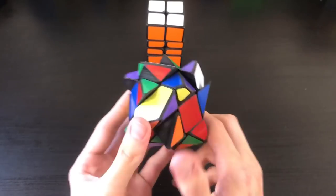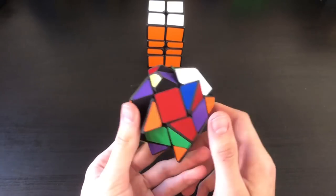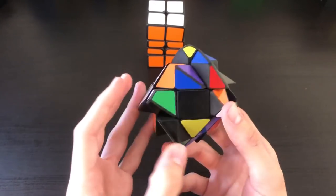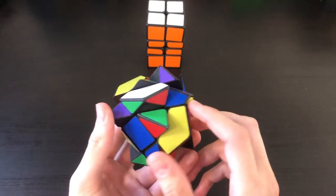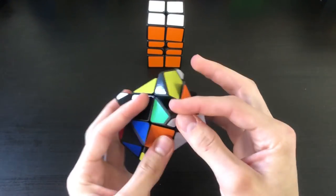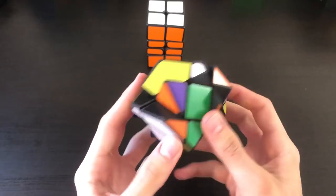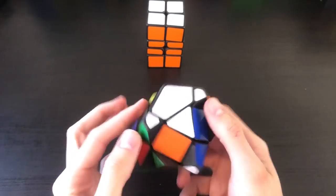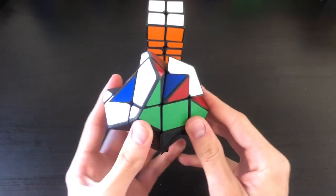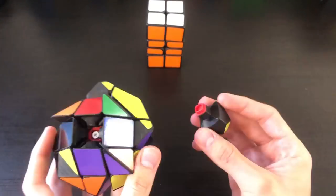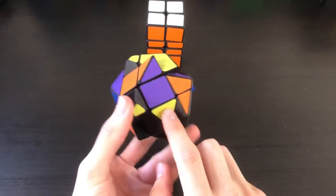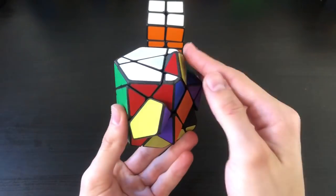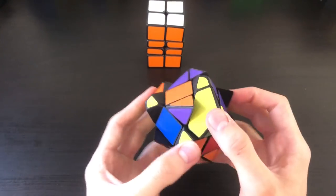Now since this is just a 3x3 shape mod, I should be able to solve it with the normal algorithms I use for a 3x3. However, when I do shape mods, I personally like to do layer by layer instead of CFOP, which is my normal solving method. Let's start with this cross right here. Let's look for the black piece that goes there. Now we have the cross. Now I'm going to go ahead and solve these four corners. Here we have the first layer, so you can see it coming together. So we're solving it like this. Now let's go ahead and continue on with the solve.